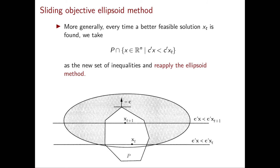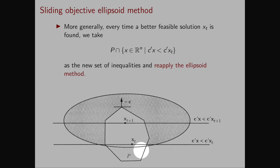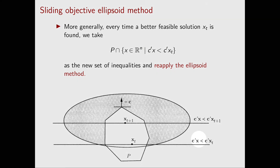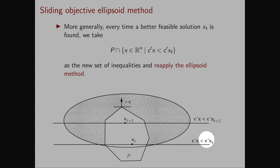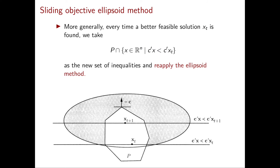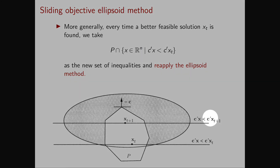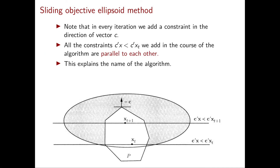We have a picture at the bottom of the slide that represents the situation. Let's say this is our polyhedron P, and in iteration t, we have found the vector xt in P. Then, in the next iteration, we consider the intersection of P with the strict inequality c transposed x strictly smaller than c transposed xt. In the picture, this is the part of the original polyhedron above this line. In this example, this set is non-empty, so the ellipsoid method will return a vector xt+1 with strictly lower cost. At the next iteration, the ellipsoid method considers the intersection of P with c transposed x strictly smaller than c transposed xt+1. At every iteration, we add the constraint in the direction of the cost vector c. All these constraints are parallel to each other, which explains the name of the algorithm — essentially, we keep sliding the hyperplane corresponding to the objective function.